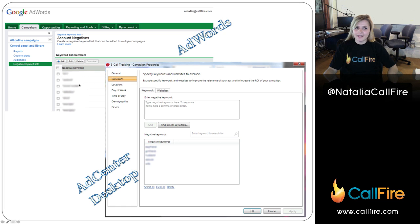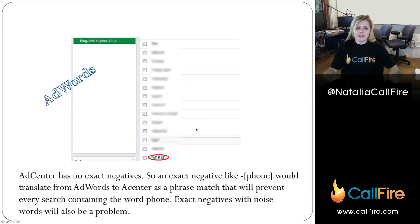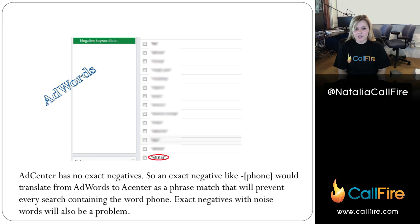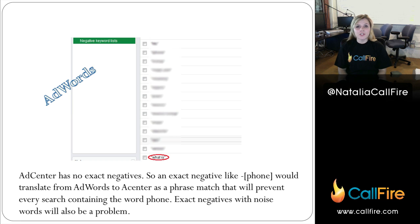Make sure you do keep track of the fact that account negatives still need to be transferred. Another thing is exact negatives. The issue is that you might have an exact negative like 'phone' in AdWords — meaning you don't want someone searching for just the word 'phone' to find your website because it's not specific enough. The problem is once you transfer that from AdWords into AdCenter, it'll convert to a phrase match automatically because there's no exact phrase match. This means that anyone with the word 'phone' in their whole query will not find your website — which is exactly what happened to us.